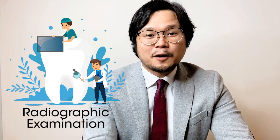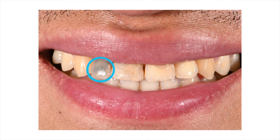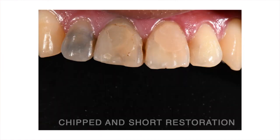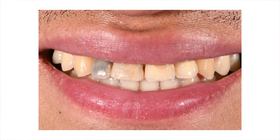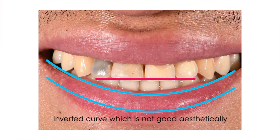Let's proceed with the proper discussion of the case. As you can see in the image, there is apparent discoloration of the lateral incisor, and it is already chipped. I want to create a good shape in the smile — a smile line that follows the lower lip line. The length of both laterals is the same, which gives this case an inverted curve that is not good aesthetically.